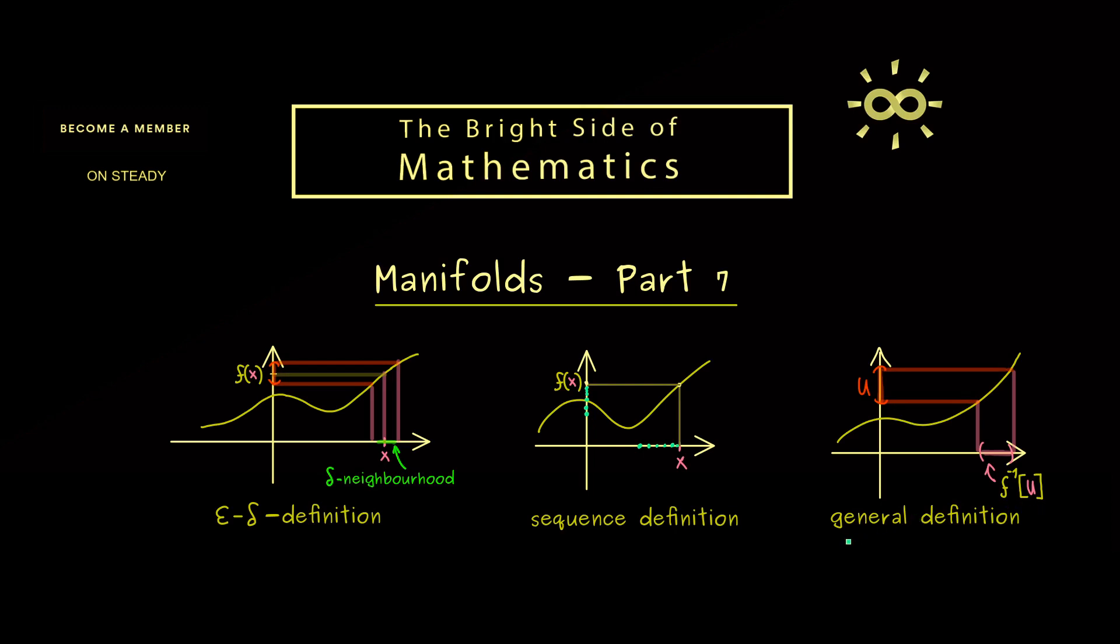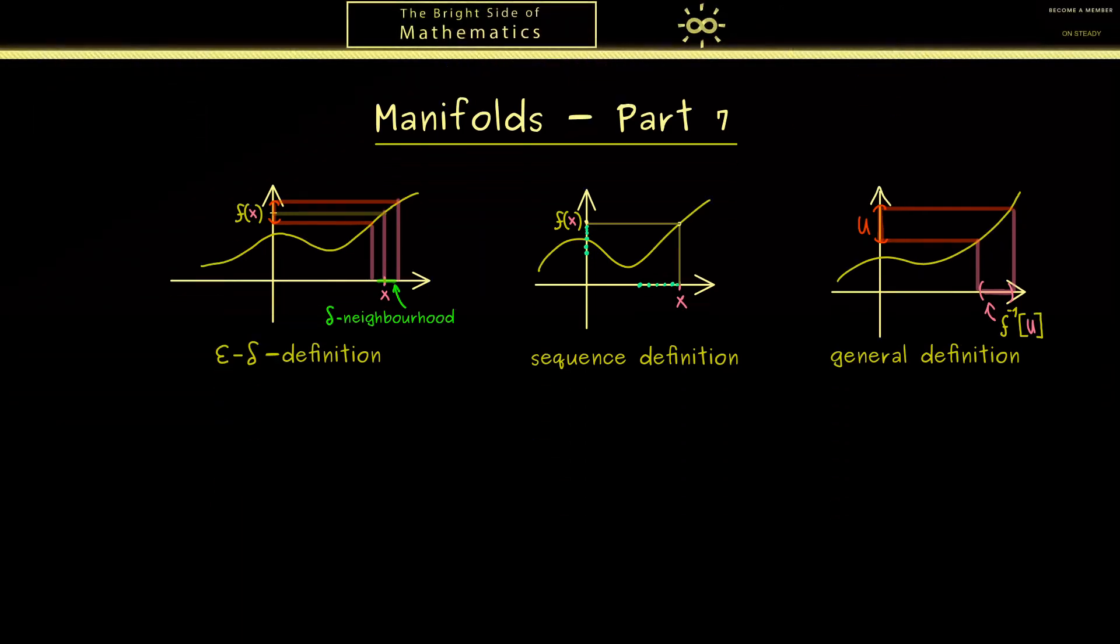Now also important to see here is that this general definition gives us immediately that the function f is continuous at all points x on the x-axis. Of course, also a point-wise definition could be generalized by just using neighborhoods, but we don't need it for the moment. Therefore I would say let's define continuity in this general way.